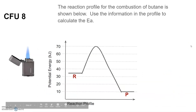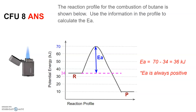Here's a CFU using the reaction energy profile for the combustion of butane — use the information to calculate the activation energy, then pause the video. To find activation energy, calculate the energy difference from the reactant to the top of the hill. The reactant is at 34 kJ and the top of the hill is at 70 kJ, so you subtract those two. Note that activation energy is always positive, so if you get a negative value, make it positive — giving you 36 kJ.